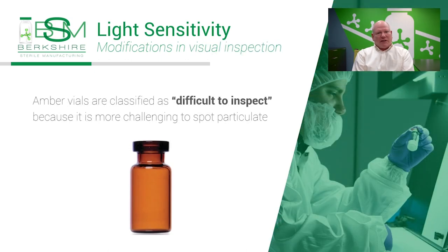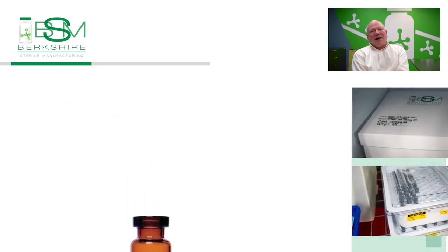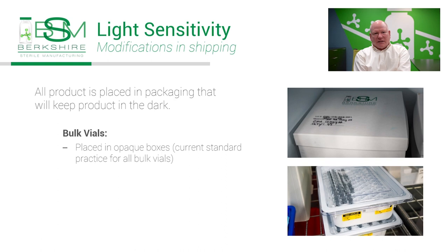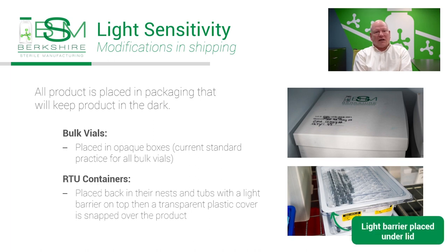There are no special challenges for filling into amber vials, but amber vials are classified as difficult to inspect in our visual inspection SOP because it's more difficult to see particulates. After inspection, all product is placed in packaging that will keep it in the dark. Bulk vials are placed in opaque boxes, which is our current standard practice. Ready-to-use containers — either vials, syringes, or cartridges — are placed back into their nests and tubs, and a transparent plastic cover is snapped over it. For light-sensitive product, the manufacturing team will place a sheet of foil between the drug product and the plastic cover to keep the product in the dark. We are currently working on getting opaque covers, eliminating the need for the foil sheet.